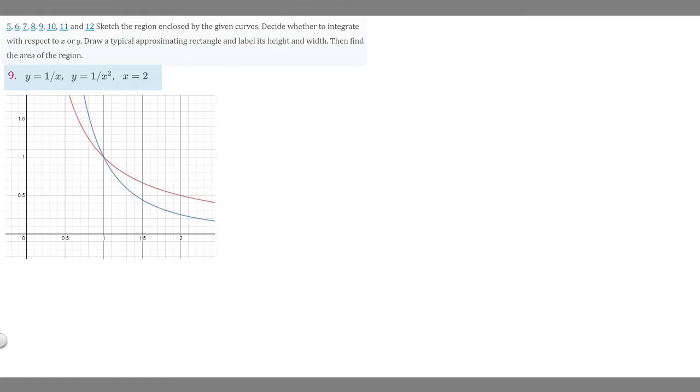So in this problem we're told to find the area of the region between these two curves. And so we're told y equals 1 over x, y equals 1 over x squared, and x equals 2. So they tell us x equals 2, so they give us one of our bounds.